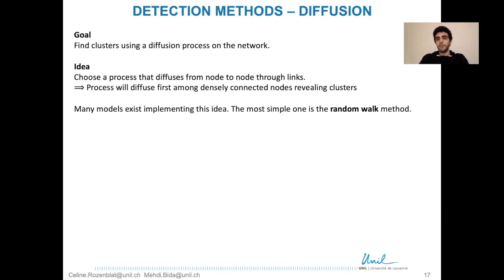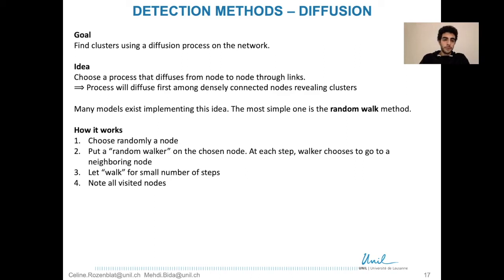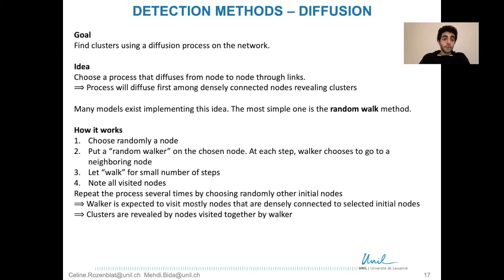Many models implement this idea, and the simplest is the random walk method. We choose a random node and place a random walker on it. At each step, the walker moves to a neighboring node randomly. We let it walk for a small number of steps and note all visited nodes. We repeat this process from several randomly chosen initial nodes. The walker is expected to visit mostly densely connected nodes, and clusters are revealed by the nodes visited together.